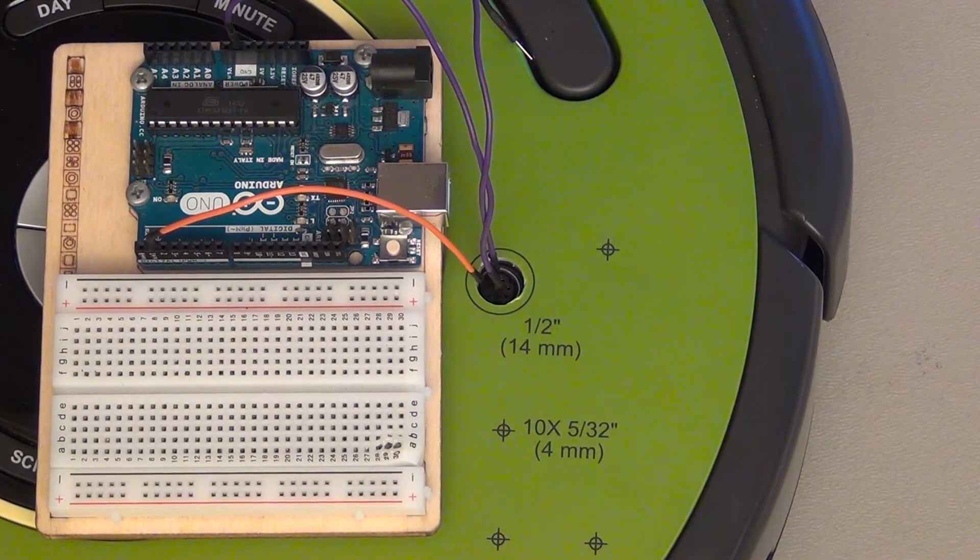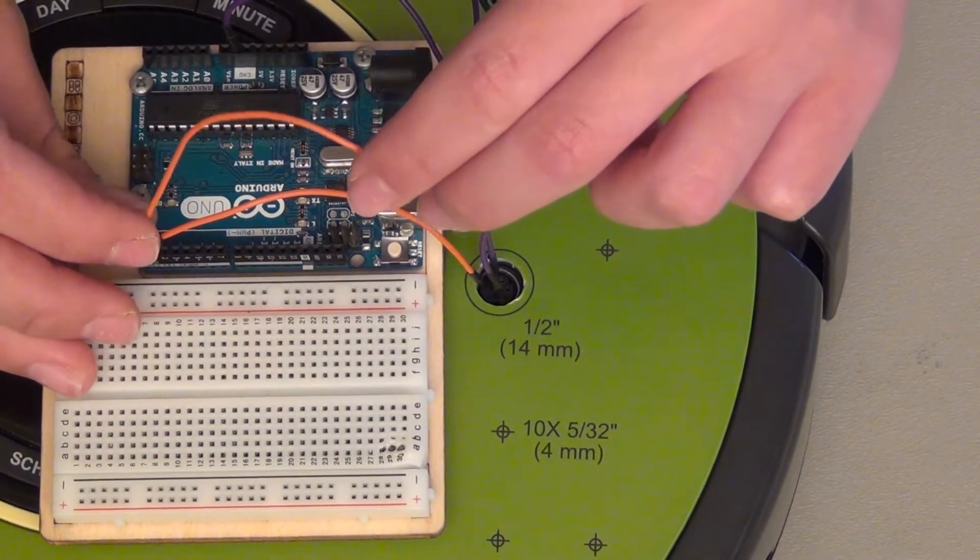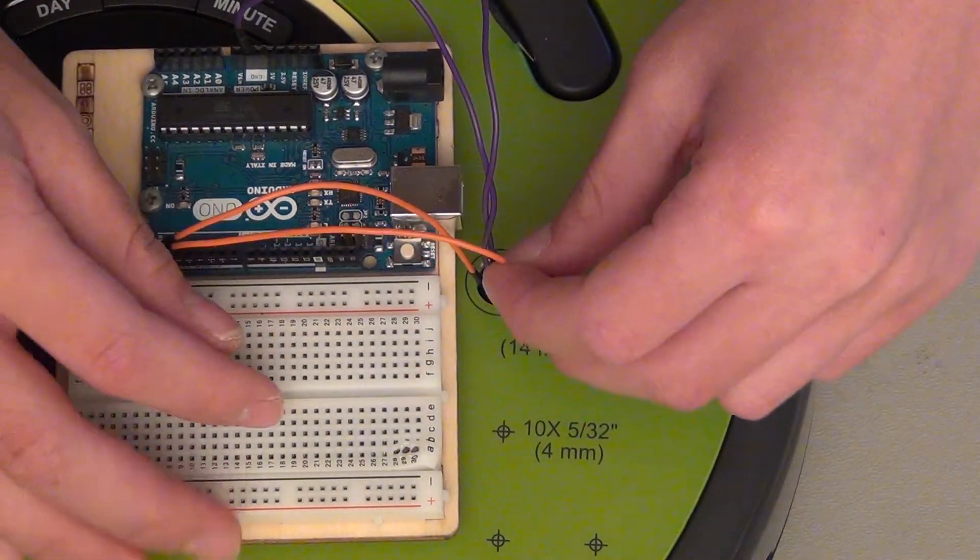And then pin four is Roomba output, and we'll plug that into the input on the Arduino side, which is pin zero.